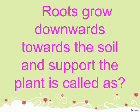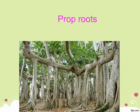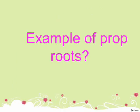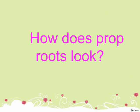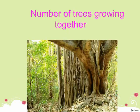Roots that grow downwards towards the soil and support the plant are called prop roots. Examples of prop roots include sugar cane, banyan, and maize. Prop roots make a plant look like a number of trees growing together.